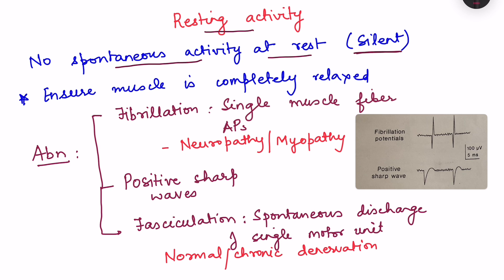For resting activity recording it is extremely important to ensure the muscle is completely relaxed, because if the muscle is stimulated we will get activity. One way to ensure relaxation is by positioning the muscle so that the antagonist is contracting — due to reciprocal innervation, if the antagonist is contracting, inhibitory activity is sent to the agonist muscle, ensuring complete relaxation of the muscle being recorded.